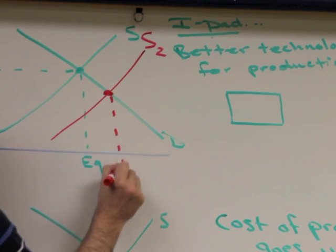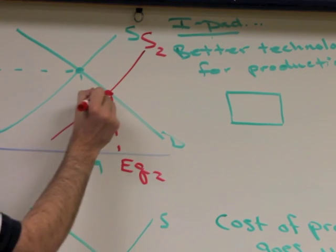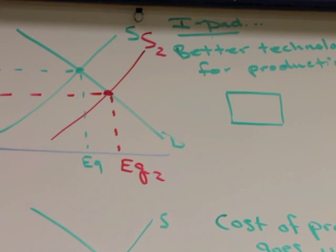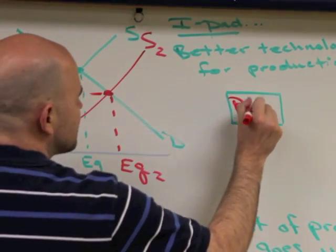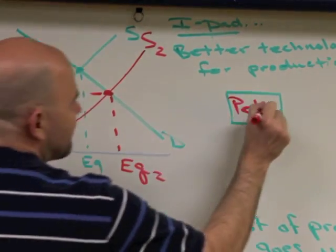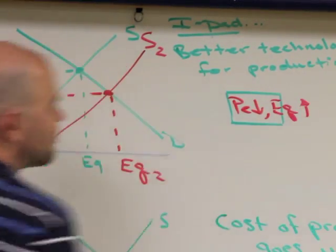Trace down, new equilibrium quantity, which has clearly gone up. Trace over to the y-axis and we have the price, which has gone down. So, I'm going to put that the price equilibrium has gone down. I'm going to put that the equilibrium quantity has gone up, given that scenario.